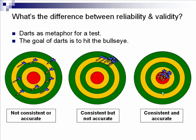If, on the other hand, I hit the target, I have evidence of validity. So let's say that hitting the target represents measuring knowledge or skill in some area.